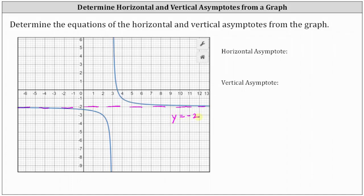To verify this equation, if we select any point on this horizontal line, the y-coordinate will always be negative two. For example, here we have the point zero comma negative two, one comma negative two, two comma negative two, and so on.